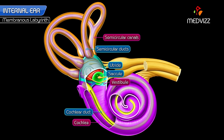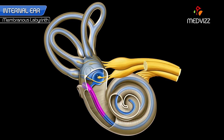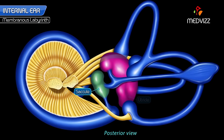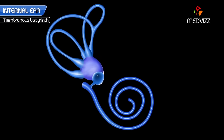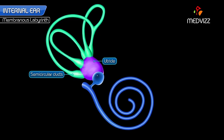These four parts are interconnected as follows. The basal turn of the cochlear duct is connected to the saccule by the ductus reuniens. The saccule and utricle are connected to each other by a Y-shaped utriculosaccular duct, which expands to form the ductus and saccus endolymphaticus. The utricle is connected to the three semicircular ducts through five openings.